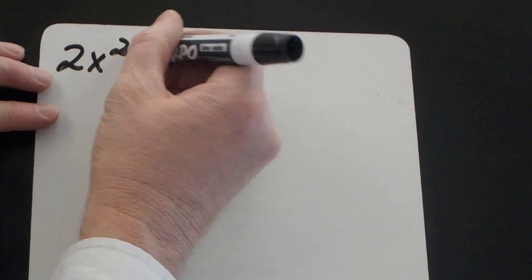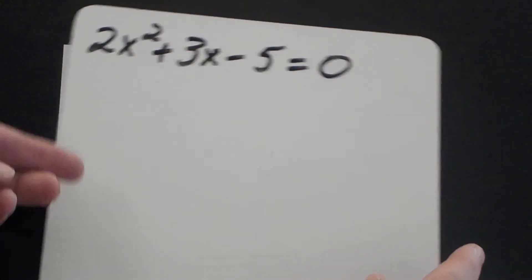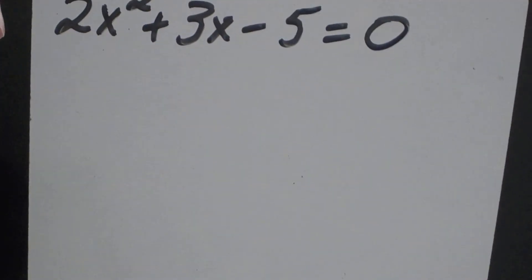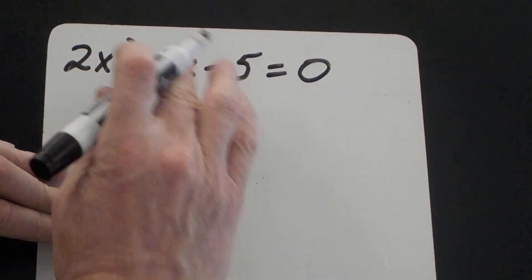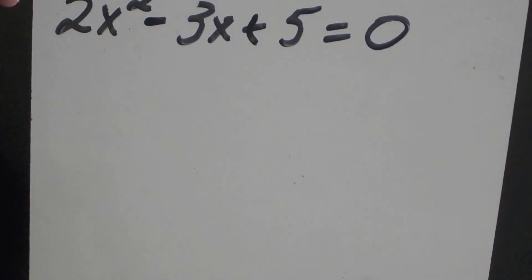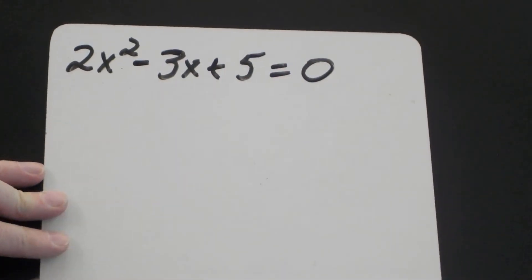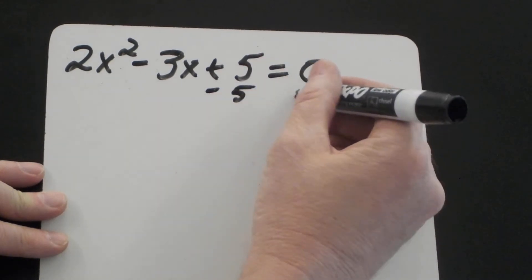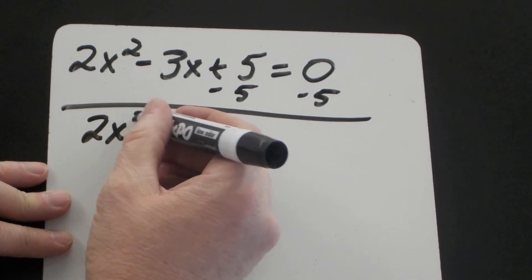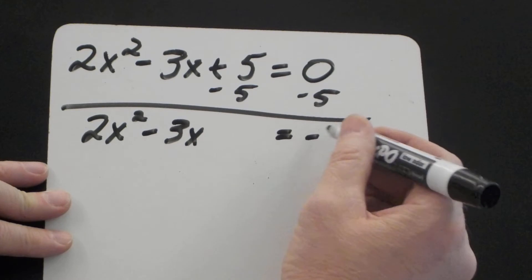I'll rewrite it as 2x squared minus 3x plus 5 equals 0 — just a quick check to make sure I copied it correctly: the sign on the 5 is plus and on 3x is minus. Now, this one is a little different. I'm still going to subtract 5 from both sides, giving me 2x squared minus 3x equals negative 5.